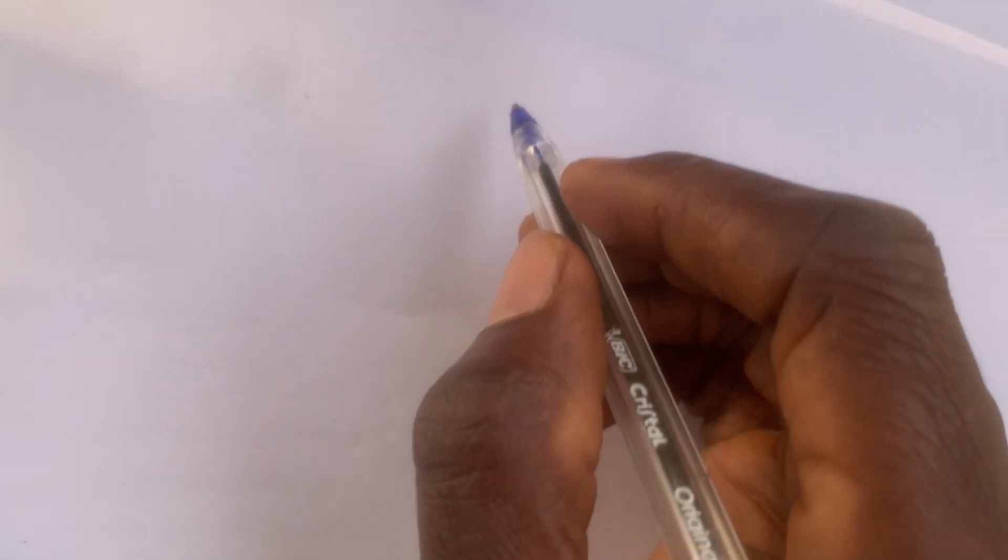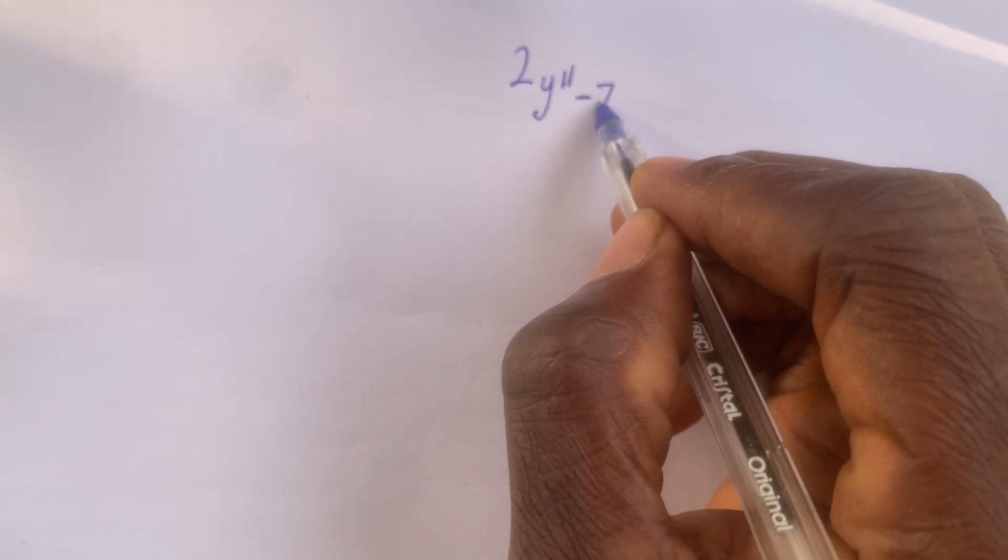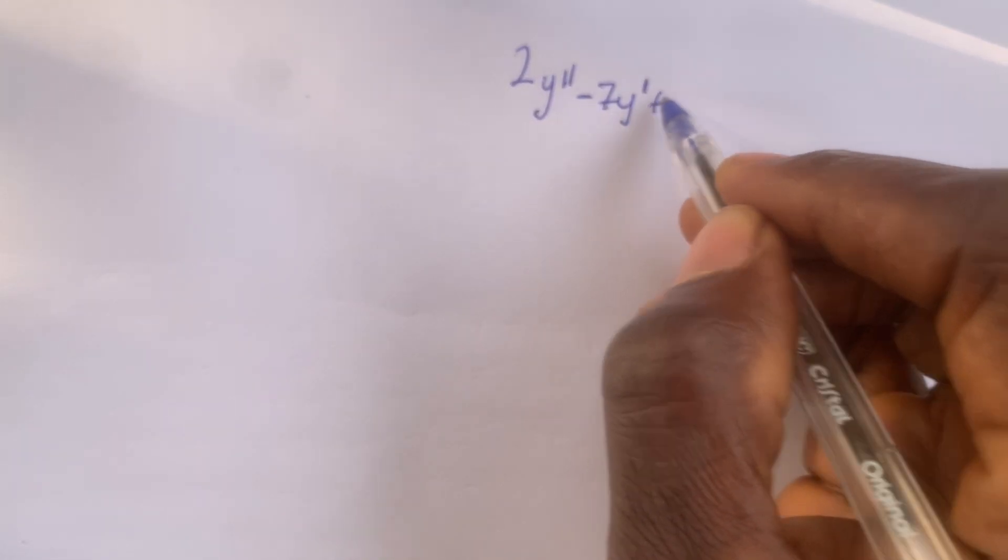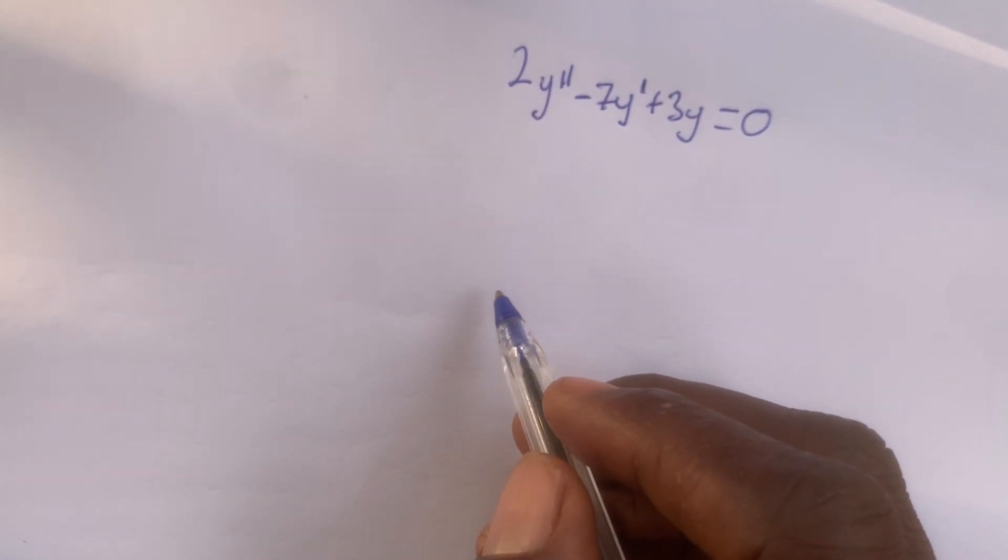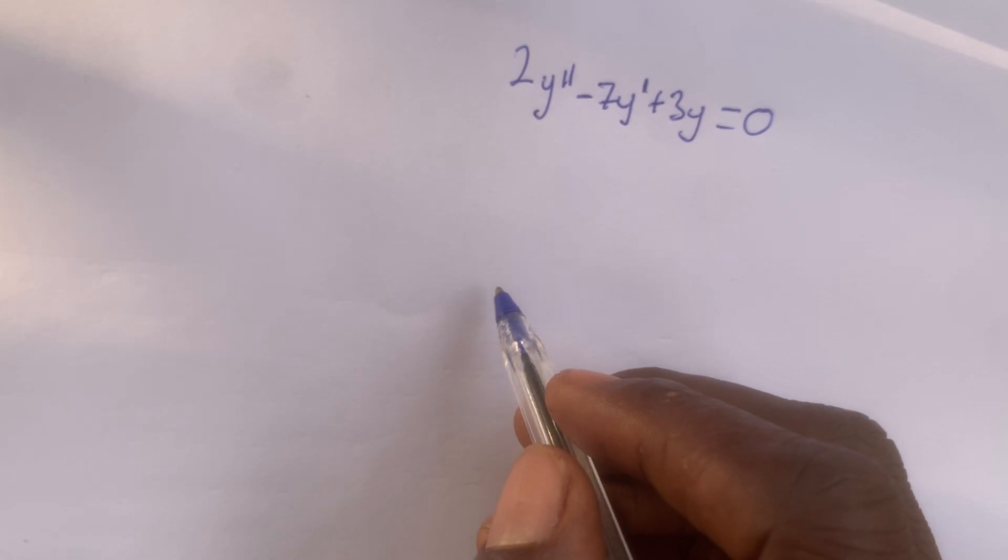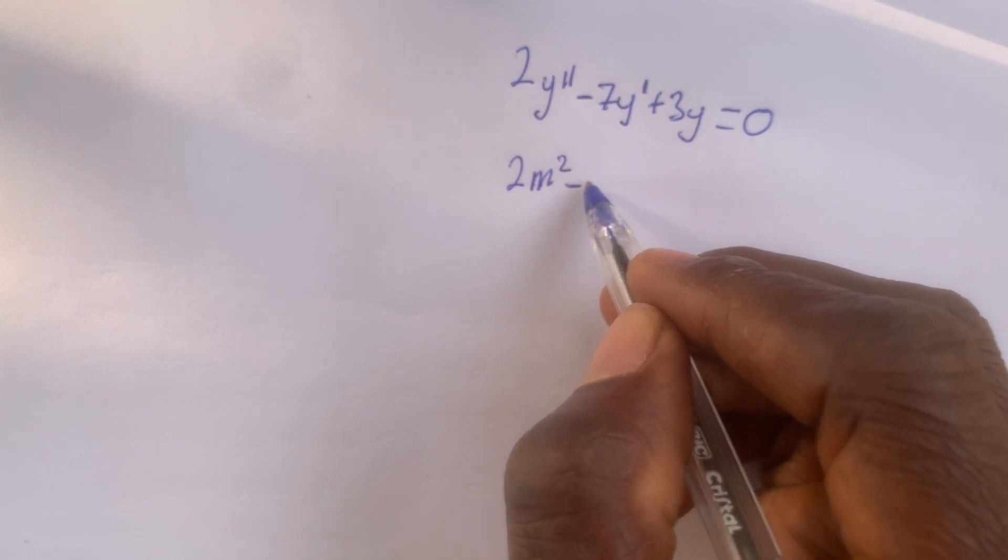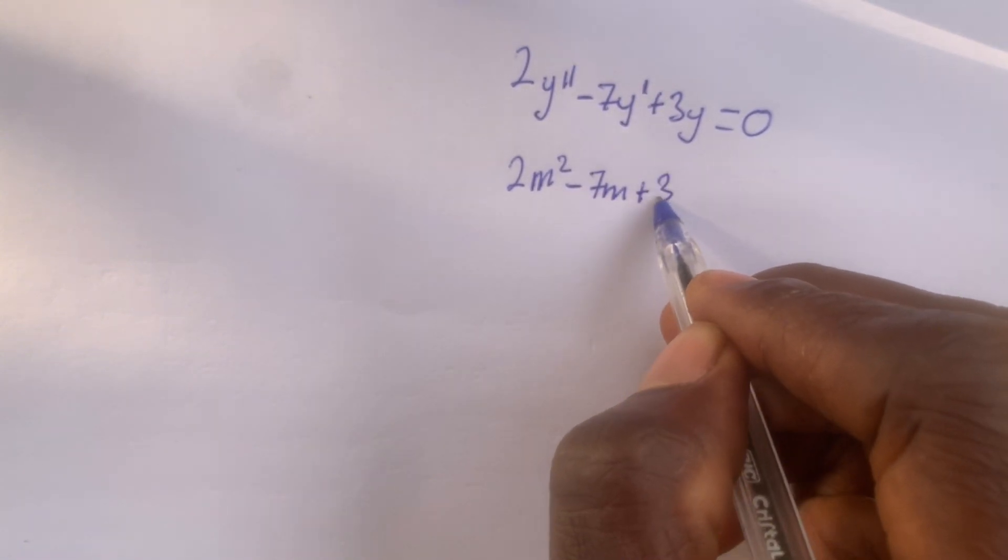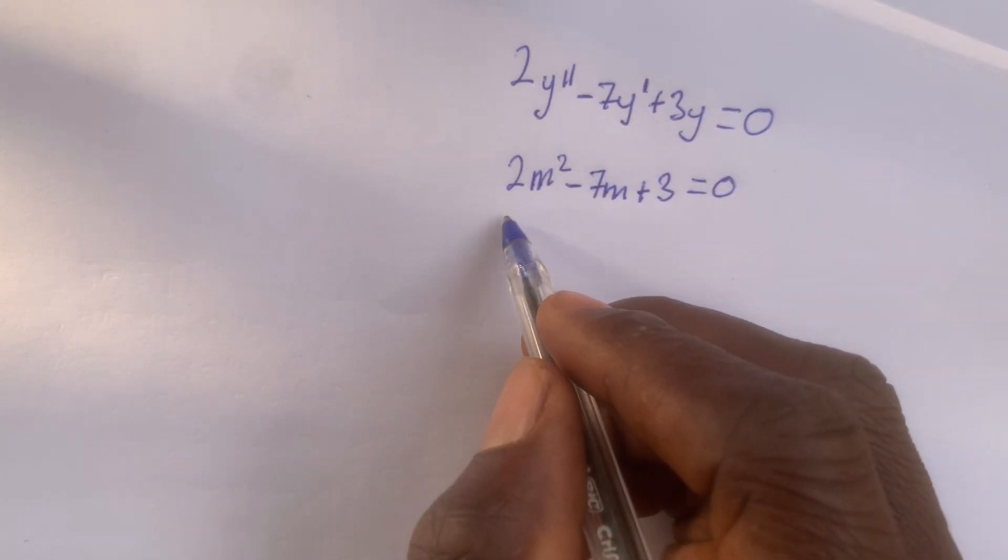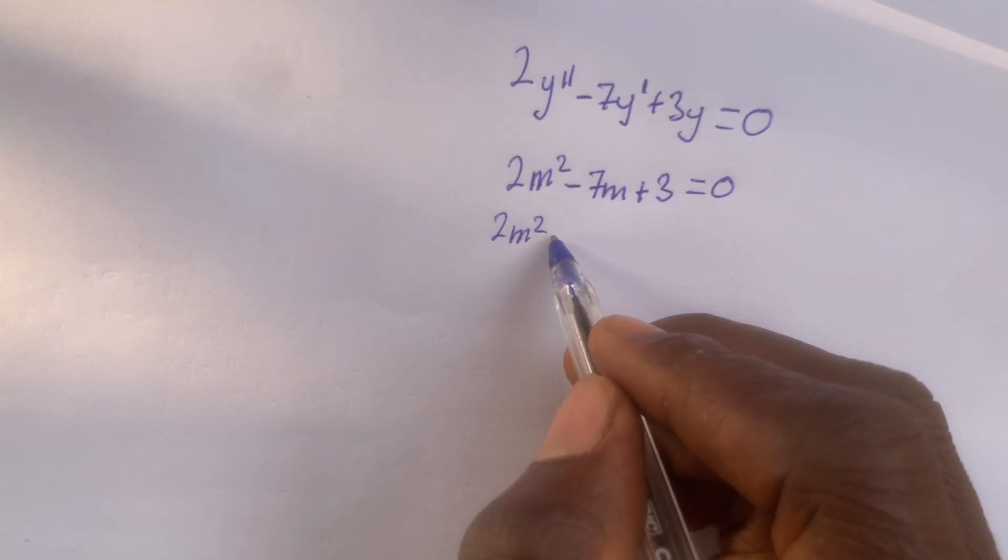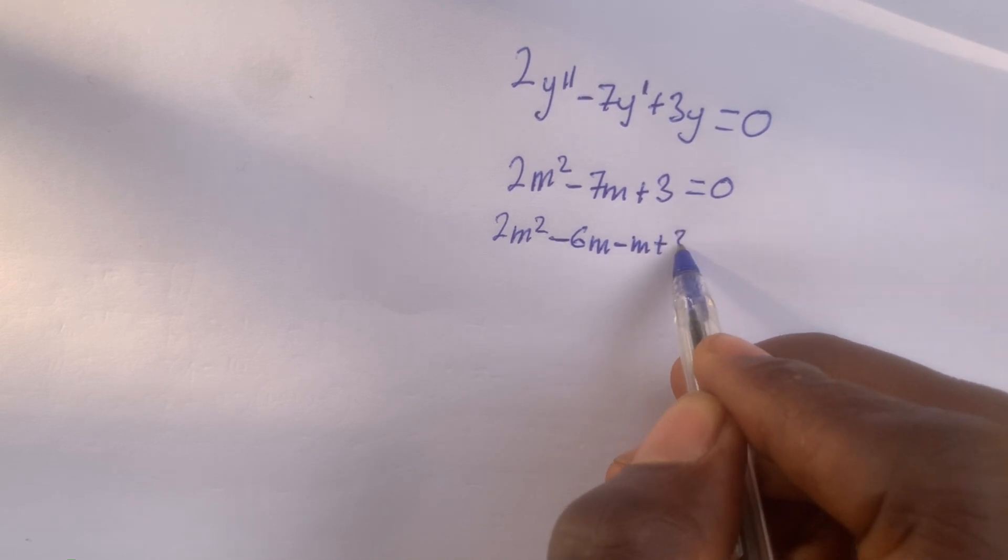If I have 2y'' - 7y' + 3y = 0, then the auxiliary equation or the characteristic equation is given by 2m² - 7m + 3 = 0. Let us factorize or solve this quadratic equation. We have 2m² - 6m - m + 3 = 0.